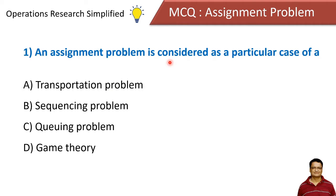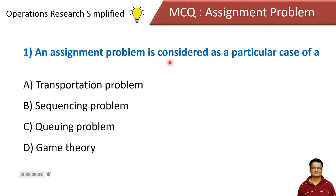Here are the 10 most important multiple choice questions from the assignment problem. The first question: an assignment problem is considered as a particular case of which? Options are transportation problem, sequencing problem, queuing problem, and game theory. The answer is transportation problem.